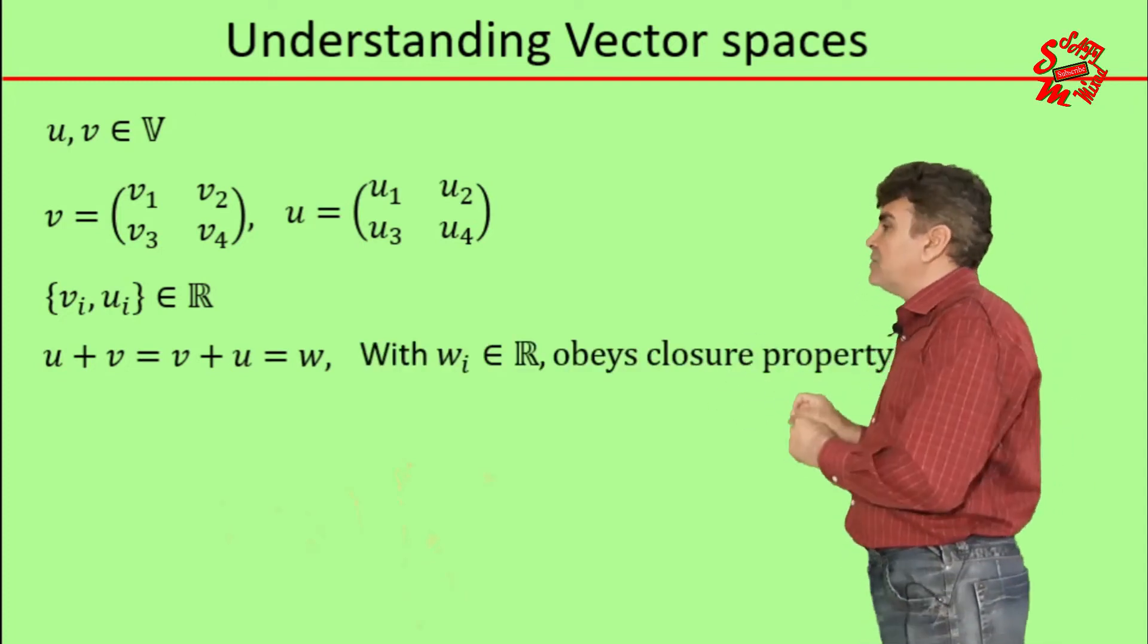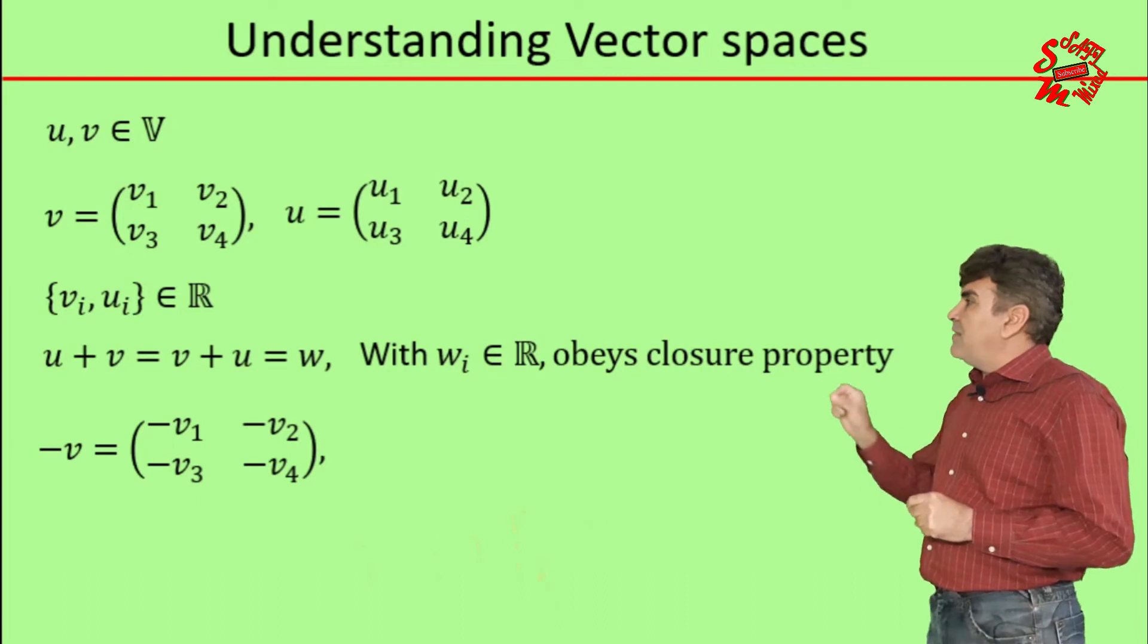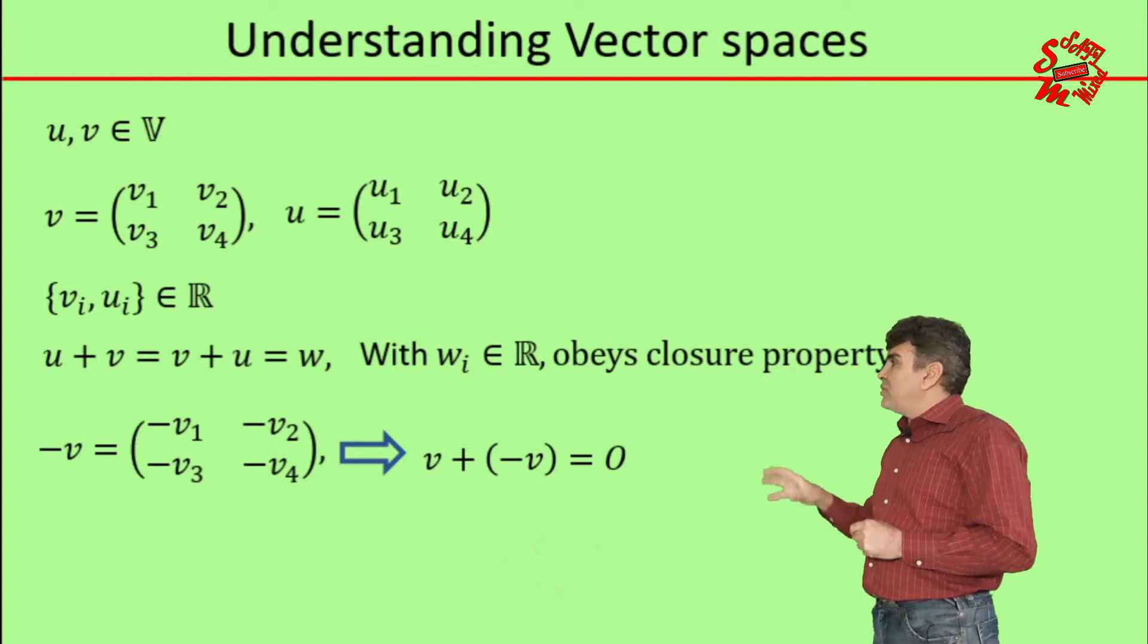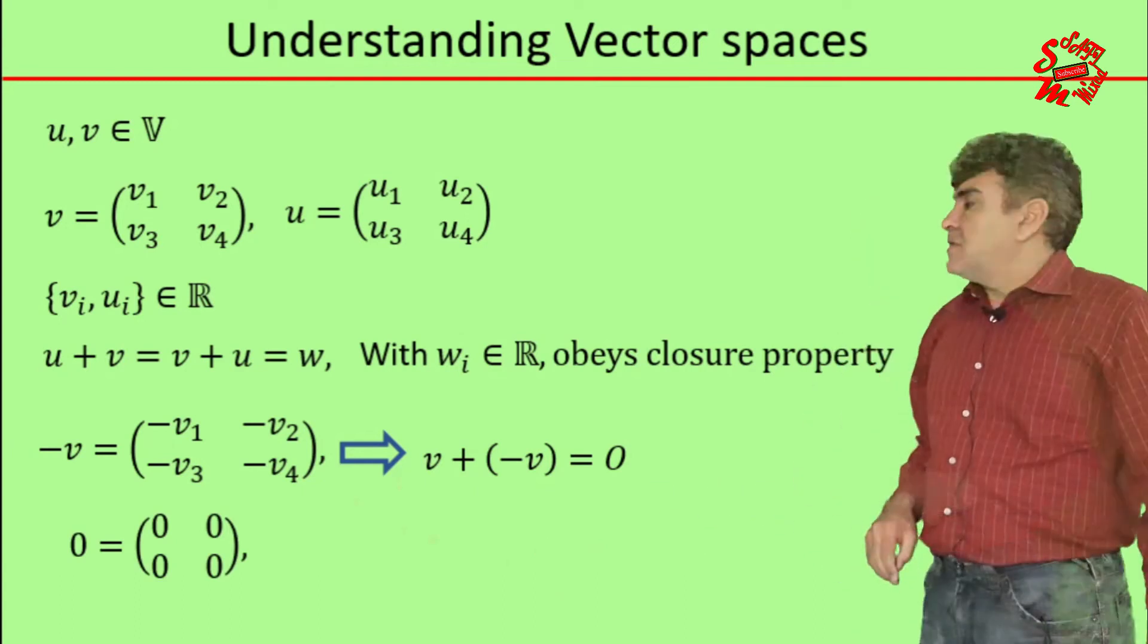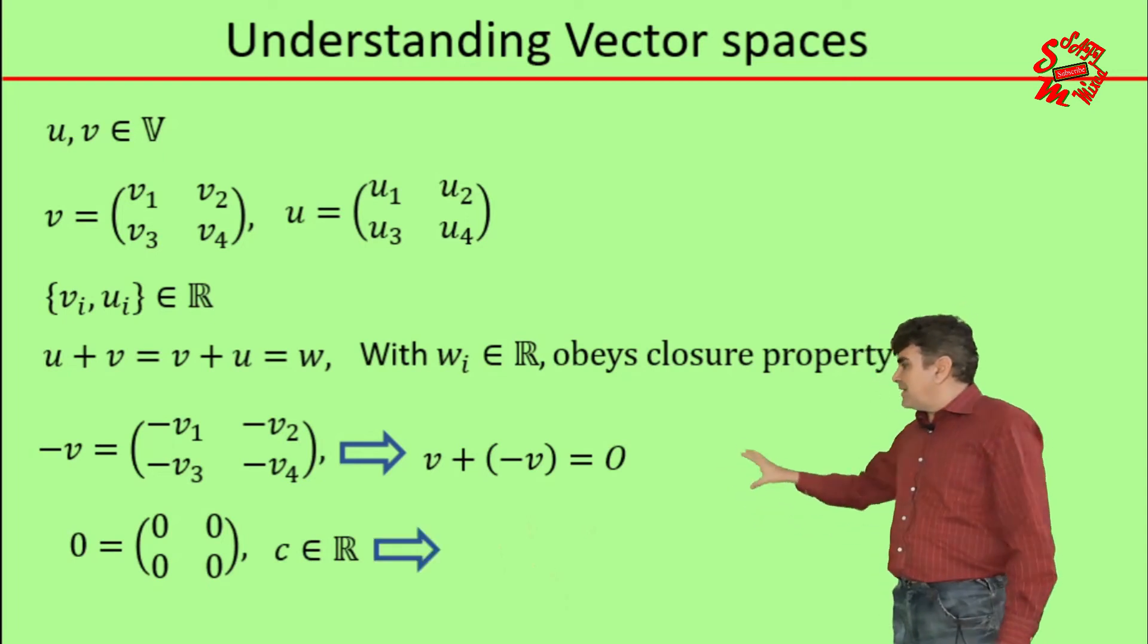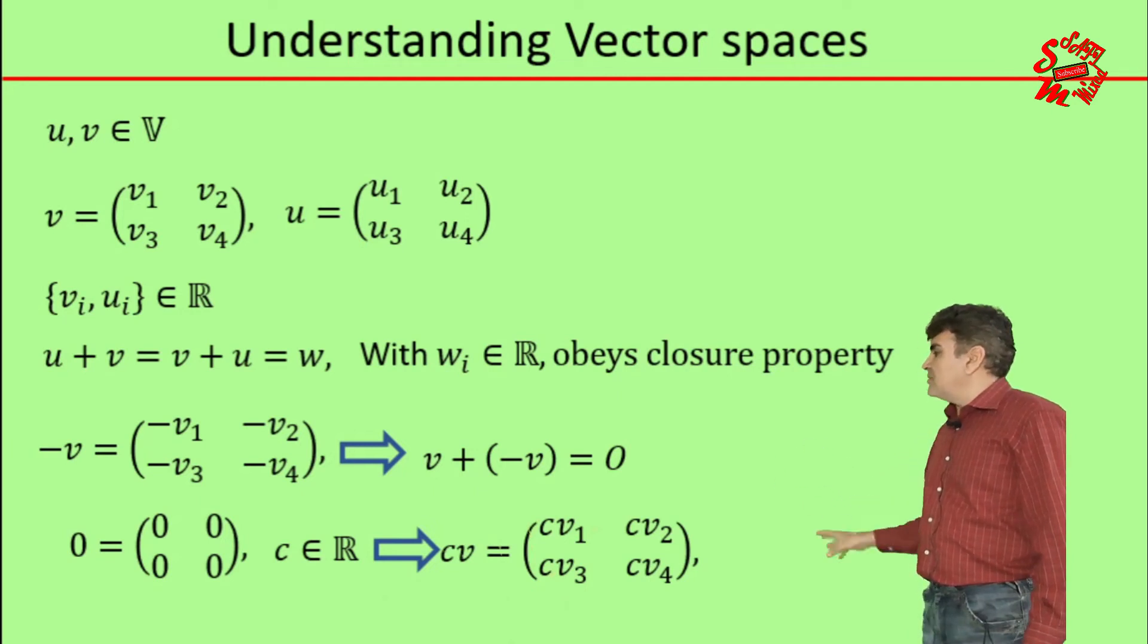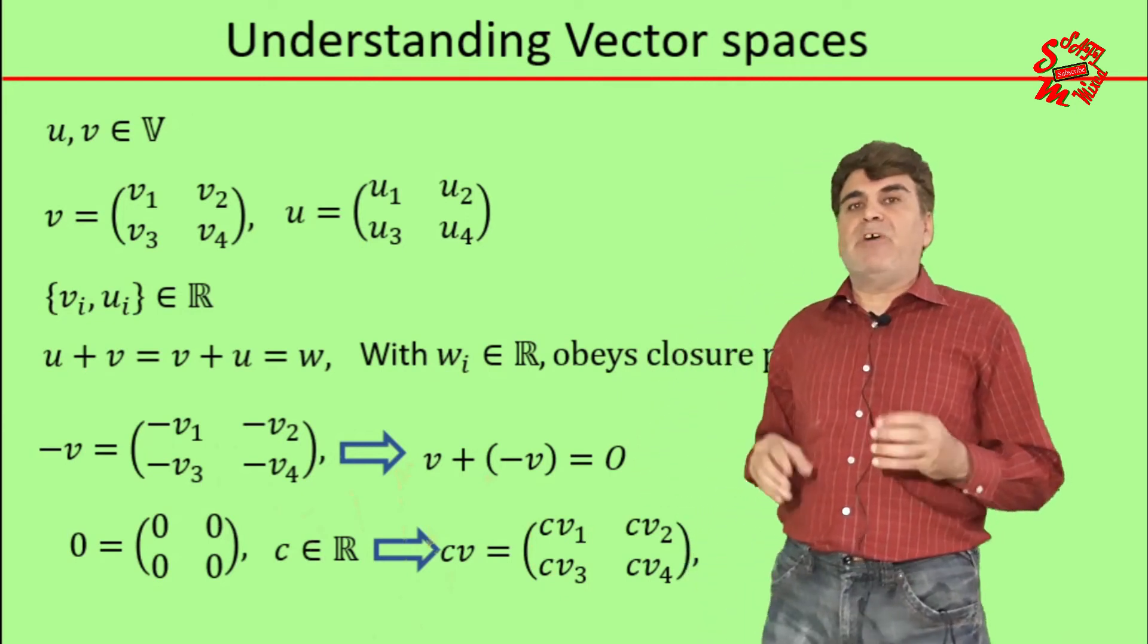Similarly, I can multiply a minus sign with v to construct this matrix. Now if I add v to minus v, obviously we will get a matrix with all entries equal to zero, and that constitutes the zero matrix. Similarly, for c belonging to the set of real numbers, I can multiply c with v to construct this matrix. Obviously, every element vi multiplied with c is again a number belonging to the set of real numbers, and therefore the square matrices qualify all the axioms for being a vector space.